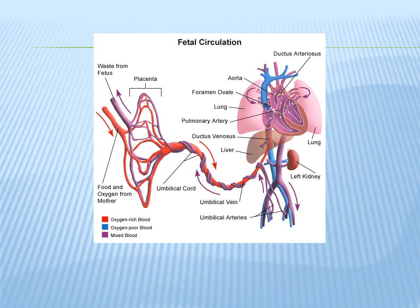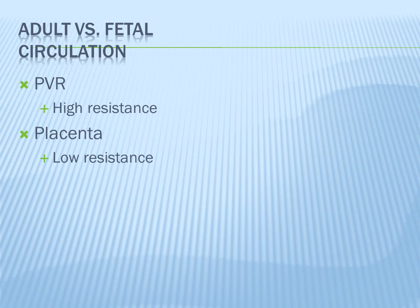Only about 10% of overall blood perfuses the lungs in fetal circulation. Because the lungs are completely collapsed and PaO2 is so low, pulmonary blood vessels are very constricted, making pulmonary vascular resistance extremely high. Low lung volumes collapse the vessels, and low oxygen concentrations cause pulmonary vasoconstriction — both contributing to very high pulmonary vascular resistance.